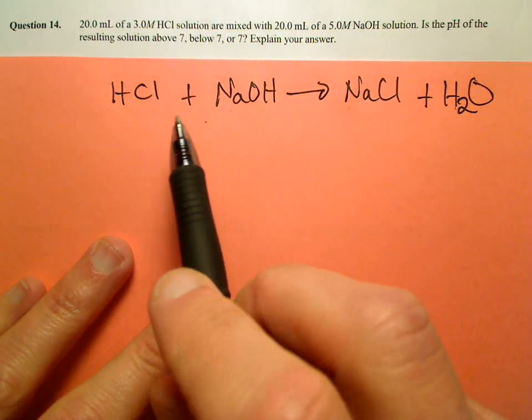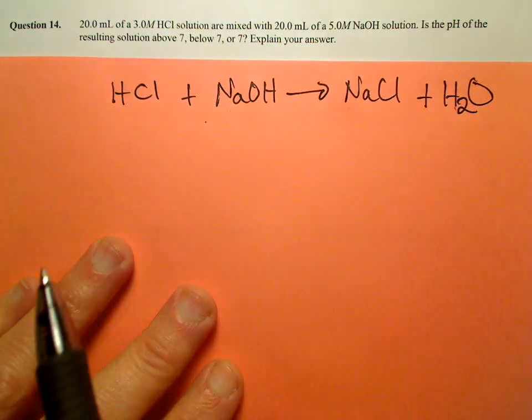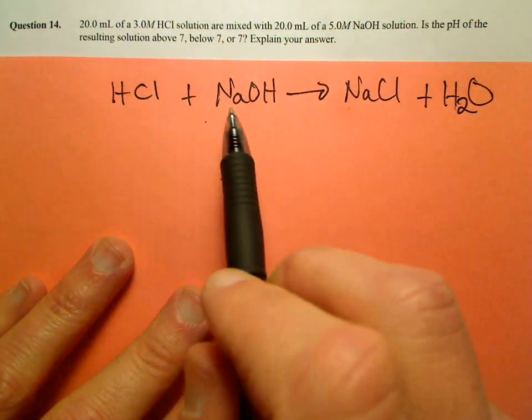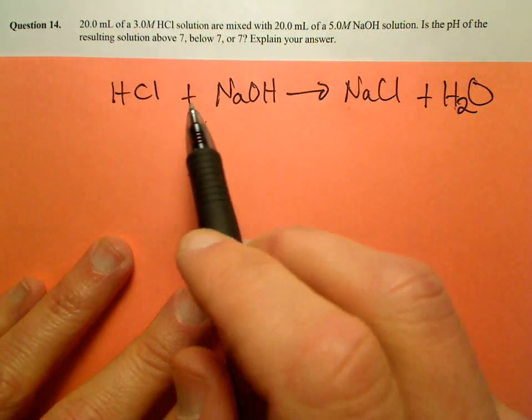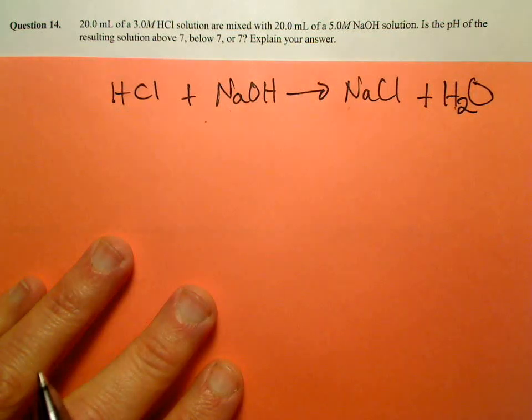So what this means is that the mole-to-mole ratio between HCl and sodium hydroxide is one-to-one. So that means for every mole of HCl, you're going to react with a mole of sodium hydroxide.